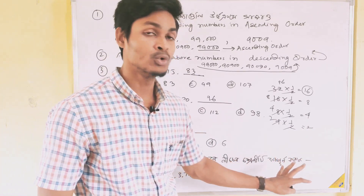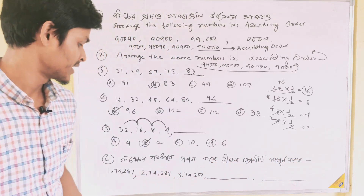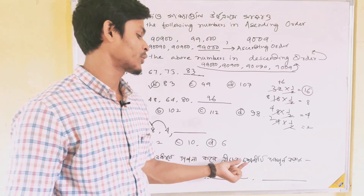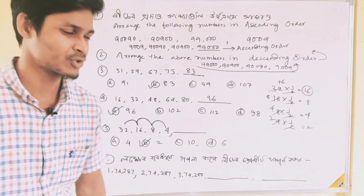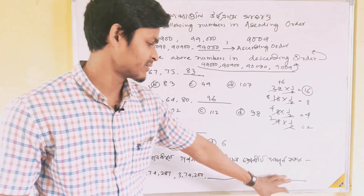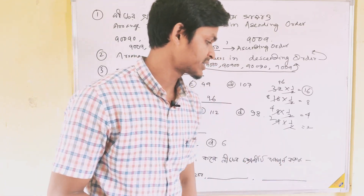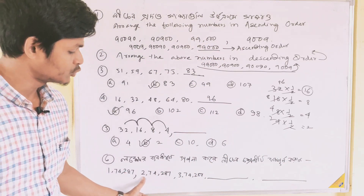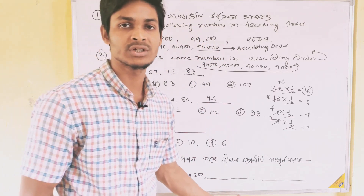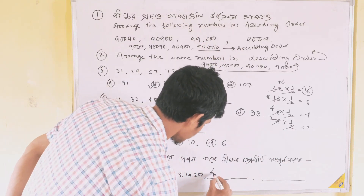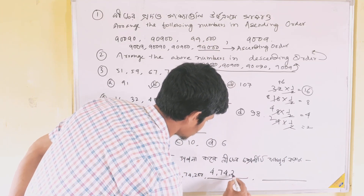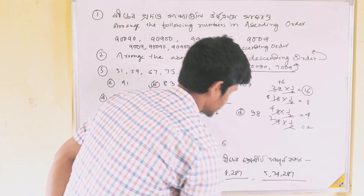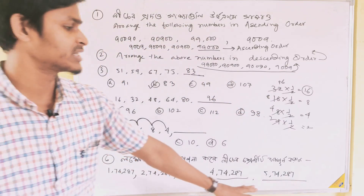This is a group, a whole group — this is a skip counting. See how it is. I have option 3, I have option 2. So there are 5,74,287 — so you will have option 3.